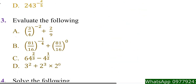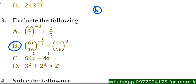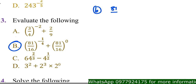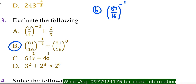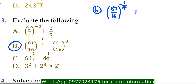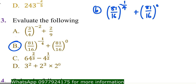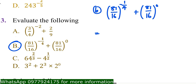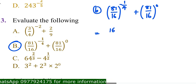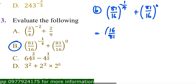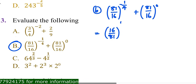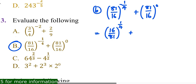Now answering part (b): we have 81 over 16 to the power negative 1/4, plus 81 over 16 to the power 0. Since 81/16 is a fraction raised to a negative power, swap what's inside — 16 comes up and 81 comes down — and the power becomes positive 1/4. So you have (16/81)^(1/4).